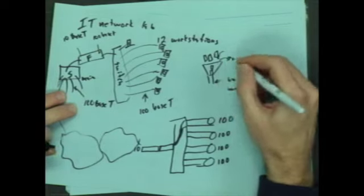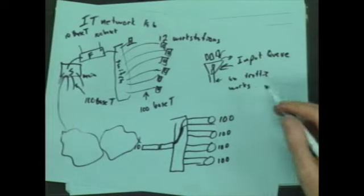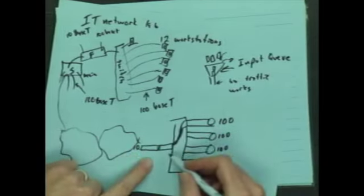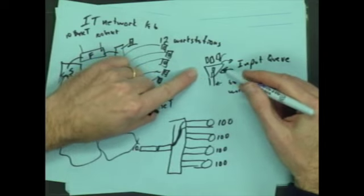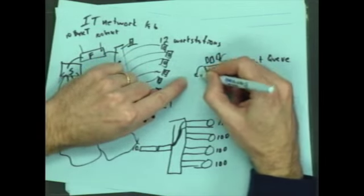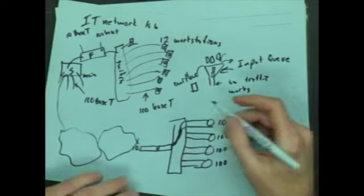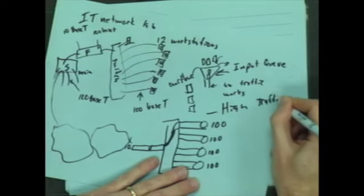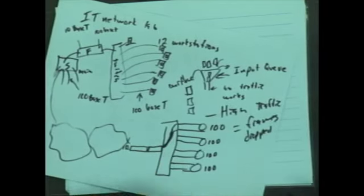And it really happens this way. The switch has a thing called an input queue that holds all the frames it needs to switch out. If it's coming out here at a trickle, so it comes in at 100 megabits per second and goes out at 10, then it can't make them out as fast as it comes in. And then the frames start getting dropped. So this is overflow. So your frame just is going to get dropped.